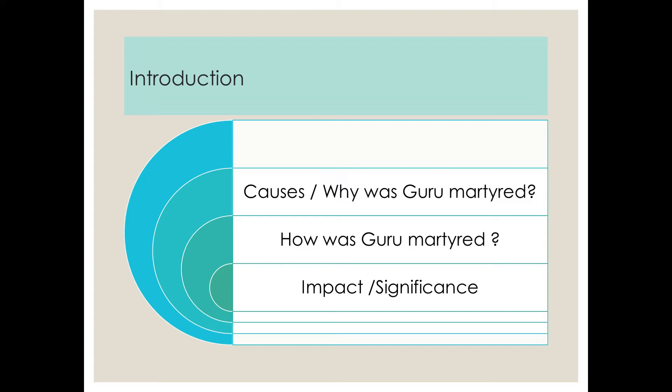Whenever we have to answer the question on Guru's martyrdom, we have to keep in account three aspects that we will be dealing with. The introduction has to be written, and you have to conclude with an assessment of the martyrdom. But besides that, there are three important aspects: one, the causes; two, how was Guru martyred; and three, what was the importance, the impact, the significance of this martyrdom?